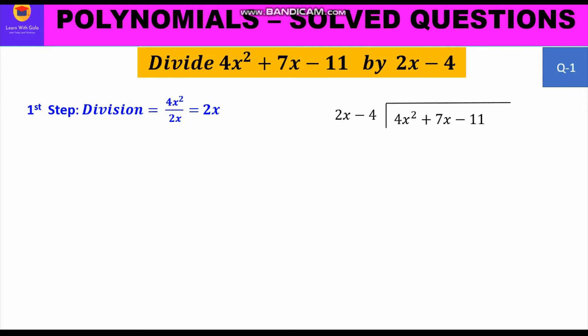We shall divide the first term of the dividend by the first term of the divisor — that is, 4x² will be divided by 2x, and we get 2x as our quotient, which we write on top. Another way of finding this 2x is to think: what should be multiplied by 2x to get 4x²? The answer is 2x.